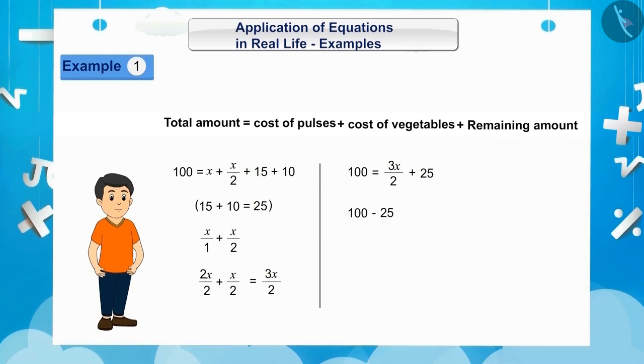Our new RHS will be 3X by 2, which means our equation will be 75 is equal to 3X by 2. Now, instead of 3X by 2 in the RHS, we need only X. Since 2 is dividing 3X in the RHS, it would multiply in the LHS. Our new LHS will be 75 into 2. Our new RHS will be 3X. Therefore, our equation will be 150 is equal to 3X.